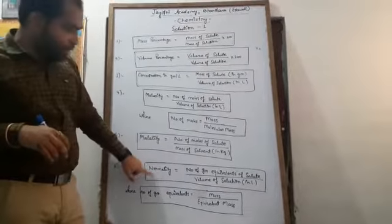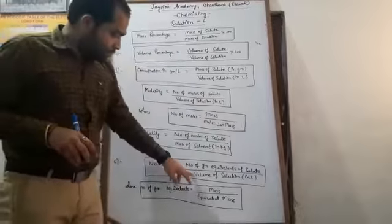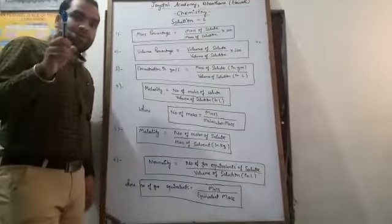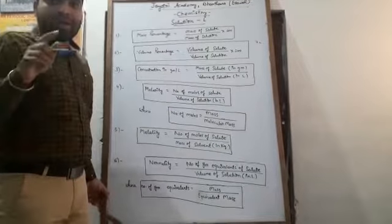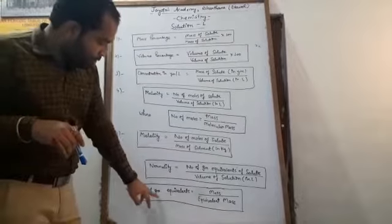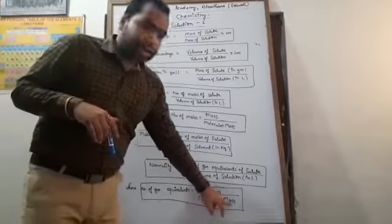The last one is normality. Normality means number of gram equivalents of solute divided by volume of solution in liter. Here students, the number of gram equivalents we have also studied in class 11 through how to calculate them. But still I am providing you the formula to calculate number of gram equivalents, which is equal to mass upon equivalent mass.